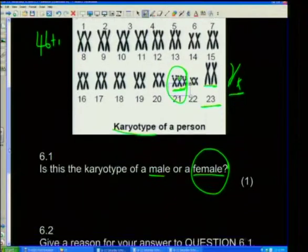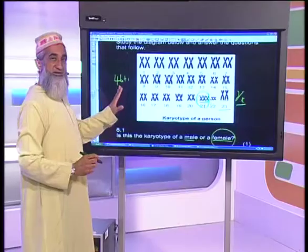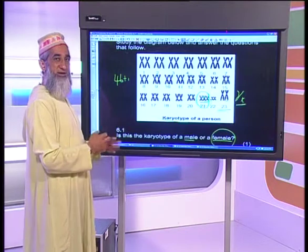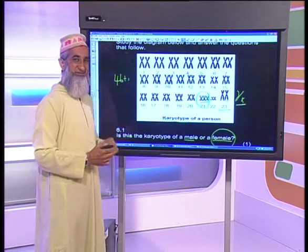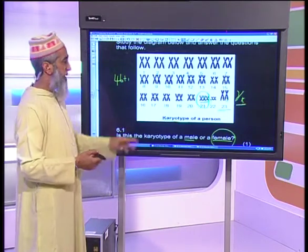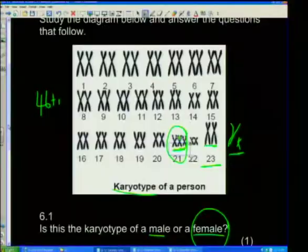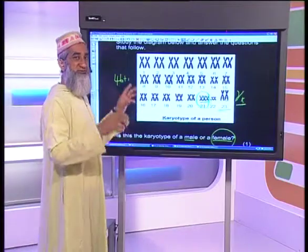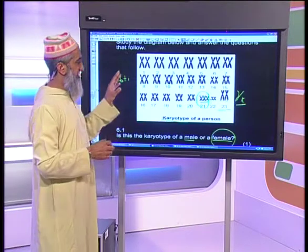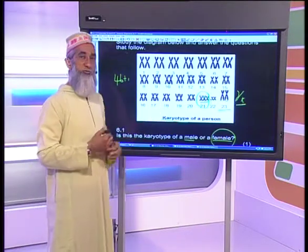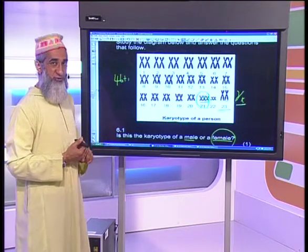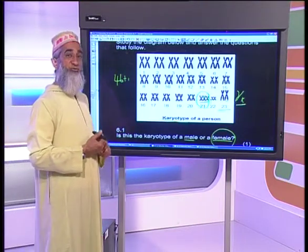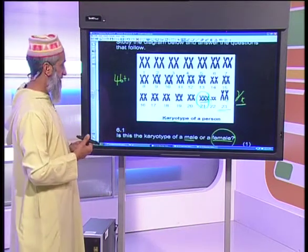To summarize the karyotype diagram: there are 23 sets; the 23rd set deals with the sex of the individual. Look especially at number 21 — if there are only two chromosomes, the person is considered normal; if there are three at chromosome set 21, the person is suffering from Down syndrome. You are also required to know the symptoms of Down syndrome.